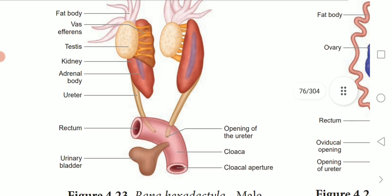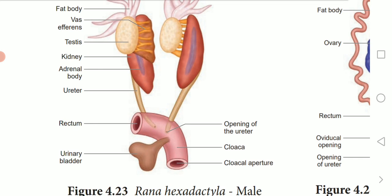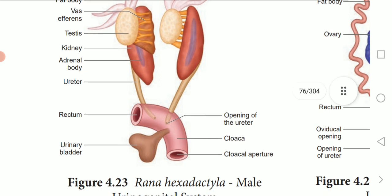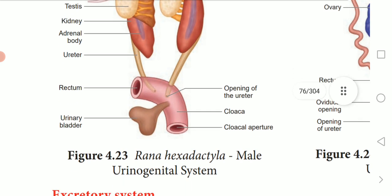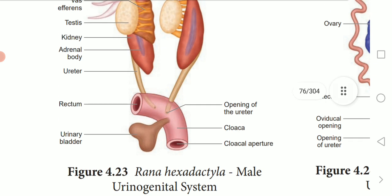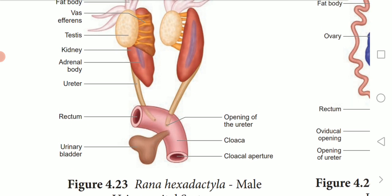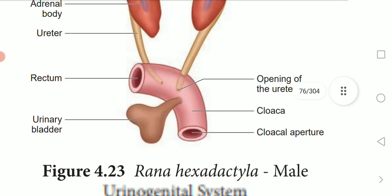The nephrons separate nitrogenous waste from the blood and excrete urea, so frogs are called ureotelic organisms — underline that word. A pair of ureters emerges from the kidneys and opens into the cloaca. A thin-walled unpaired bladder is present ventral to the rectum and also opens into the cloaca.